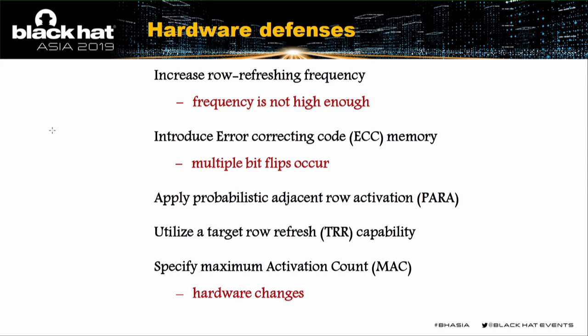The second hardware solution is to introduce Error Correcting Code (ECC) memory. ECC is able to correct one-bit errors and detect double-bit errors. However, the Rowhammer bug can induce multiple bit-flips, which cannot be properly detected by ECC. The third solution is Probabilistic Adjacent Row Activation (PARA): intensive reading from a row triggers activation of its adjacent rows with high probability, preventing adjacent rows from losing charge at a much faster rate. Similarly, Target Row Refresh (TRR) asks the memory controller to refresh specified rows.